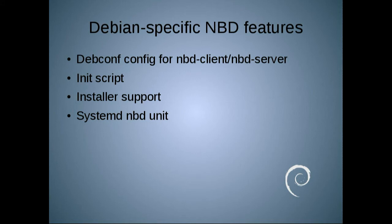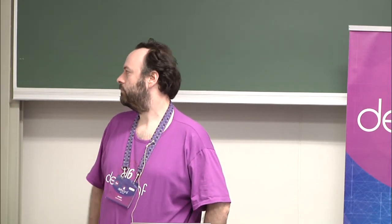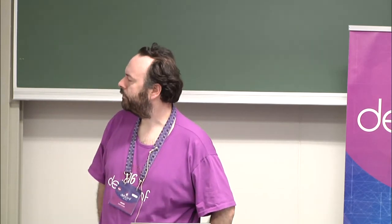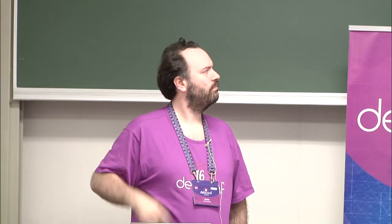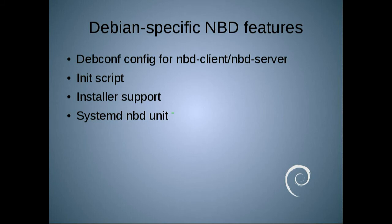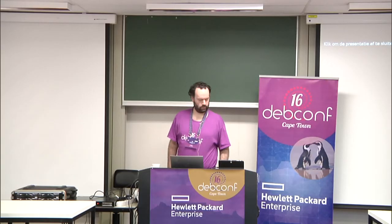There are a few Debian-specific NBD features I implemented. I wrote some debconf configuration for the client and the server, but when I was working on the systemd NBD unit recently, I found the client's version of the debconf configuration was so broken it must not have been used for five years, because it could not possibly generate a valid configuration file. So I threw that out. I also added installer support, a systemd NBD unit, and an init script. I'm starting to be convinced that debconf is not as useful as I once thought it was. That's what I had planned for today.